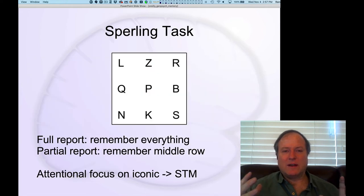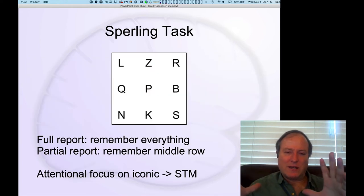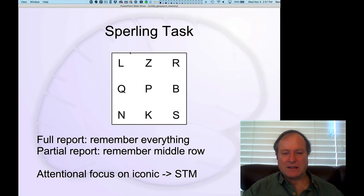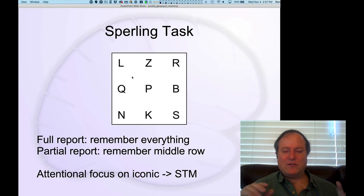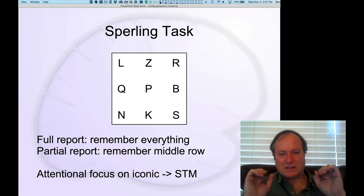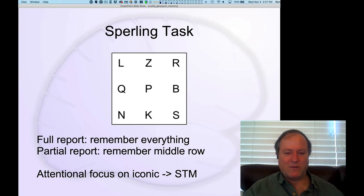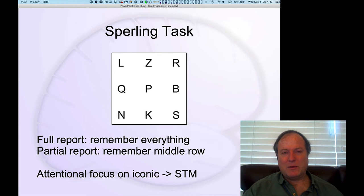One of the best illustrations of the low-level part of those dynamics is the Sperling task — a classic 1960s cognitive psychology task. Basically, you see a grid of letters. In one condition, the display is flashed up and disappears after about 100 milliseconds, and then in the full report condition you have to report as much as you can remember — all the letters. Typically people can report about four to four-and-a-half items.